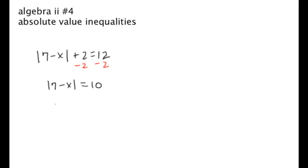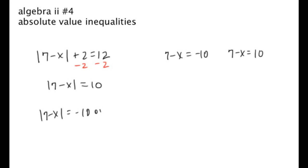Now what we do is we set two equations up: 7 minus x is equal to negative 10, and 7 minus x is equal to positive 10. You might be asking why — it's because the absolute value of 7 minus x could be negative 10 or positive 10. The absolute value of negative 10 is 10, and the absolute value of positive 10 is also 10, because we're talking about distance from 0. Negative 10 is 10 units from 0, and the same for positive 10. That's why we set up two equations.